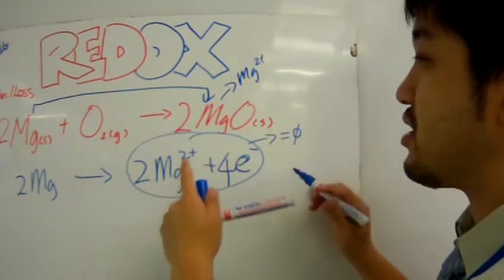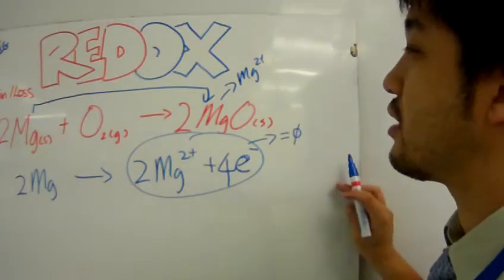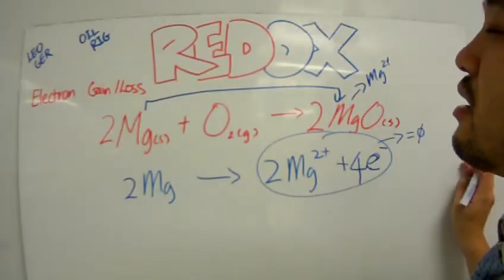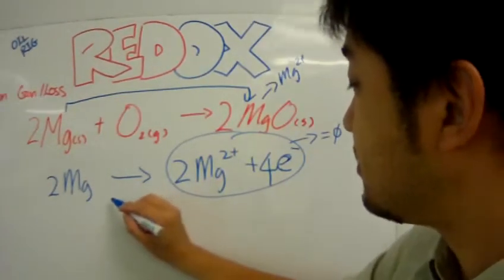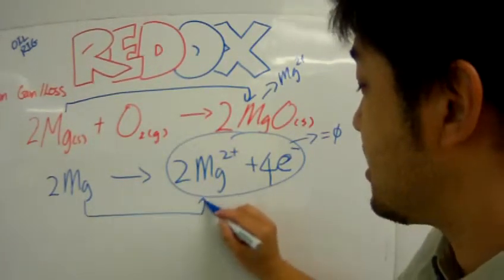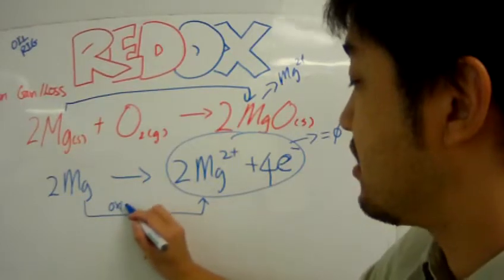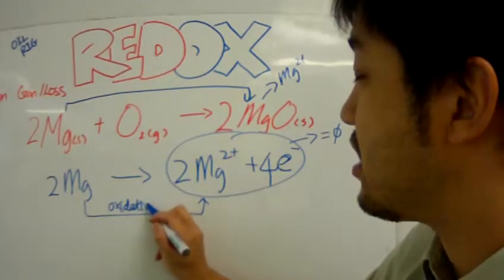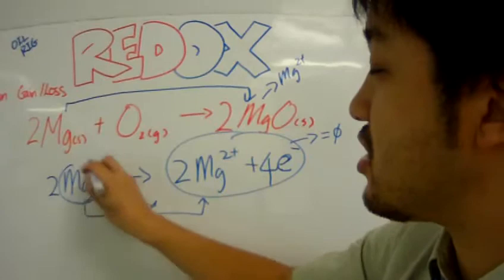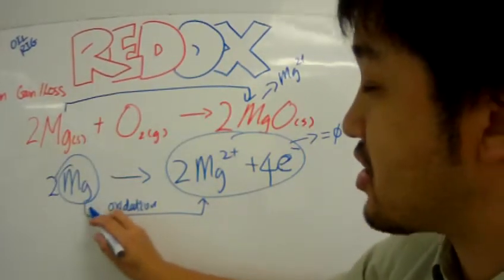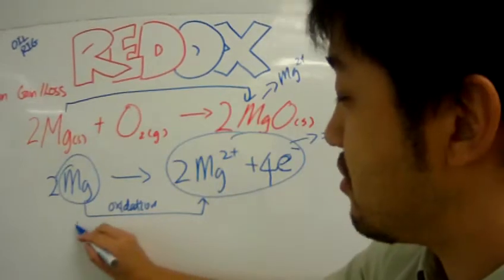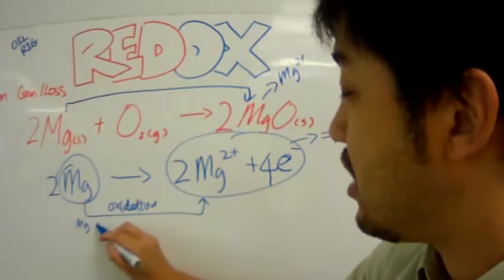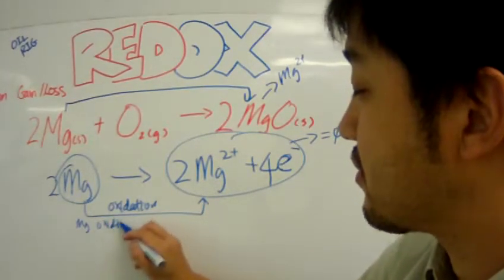And the oxygen over here, because it lost two electrons, people have defined the loss of electrons as oxidation. So, this process is known as oxidation. So, it is the elemental magnesium here that oxidized to magnesium ion. Magnesium oxidized.